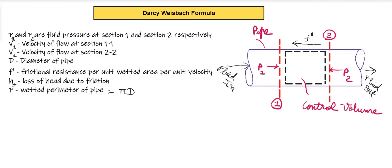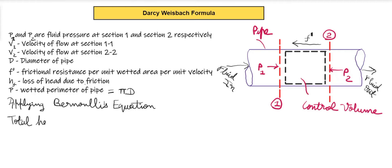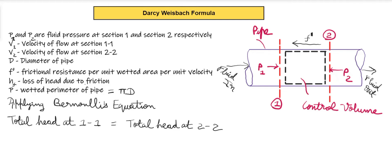We will apply Bernoulli's equation between section 1-1 and section 2-2. The Bernoulli's equation is P/ρg + V²/2g + Z = constant. We will consider the head loss due to friction between sections, so the total head at section 1-1 equals the total head at section 2-2 plus the head loss due to friction Hf.